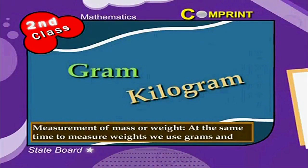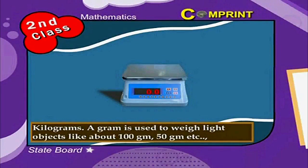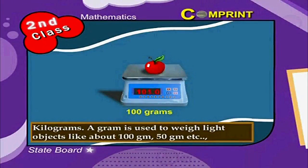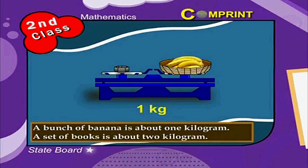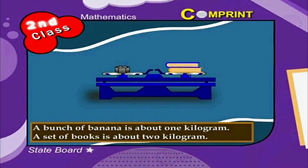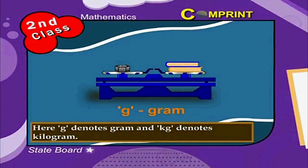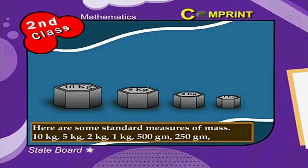Measurement of mass or weight. To measure weights, we use grams and kilograms. A gram is used to weigh light objects like about 100 grams, 50 grams like that. A kilogram is used to weigh heavier objects. For example, a bunch of bananas is about 1 kilogram and a set of books is about 2 kilograms. G denotes grams and kg denotes kilograms.